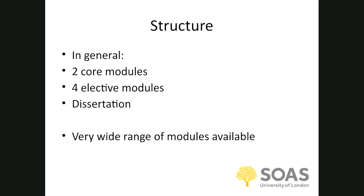The general structure is that there are two core modules. All of the specialized degrees have one dedicated core module, so Violence, Conflict and Development has a core module that all VCD students take, then they get a choice of what will be their second core module. That structure goes across the other specialist degrees. Each person then takes four elective modules — two in the first term and two in the second term.